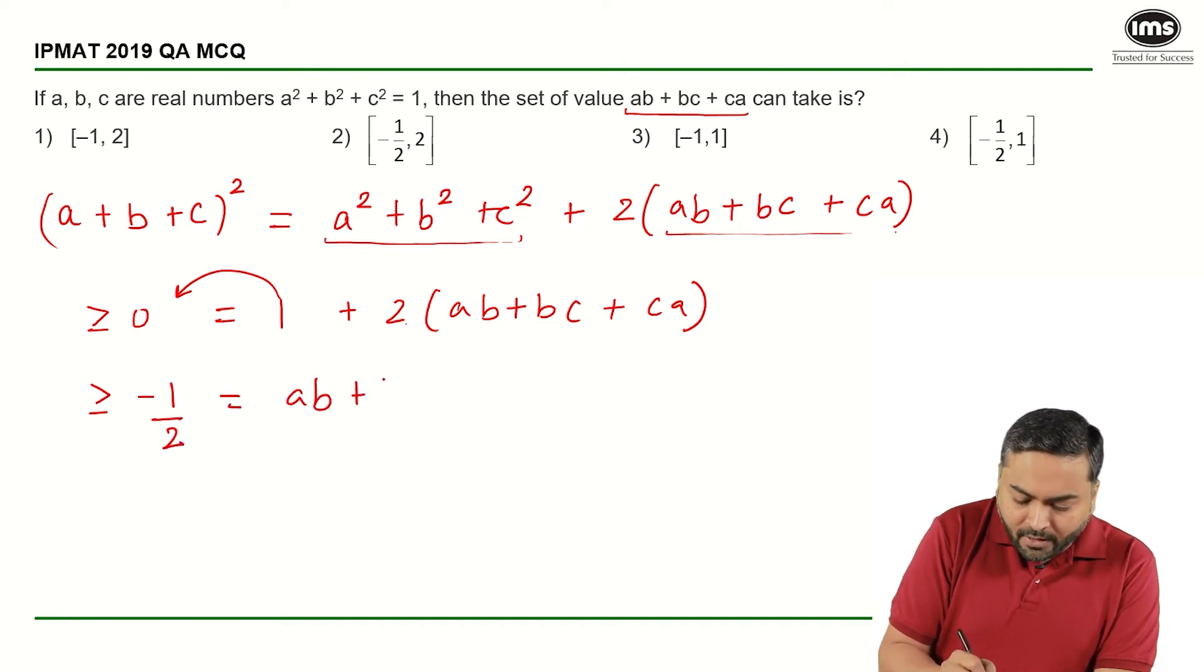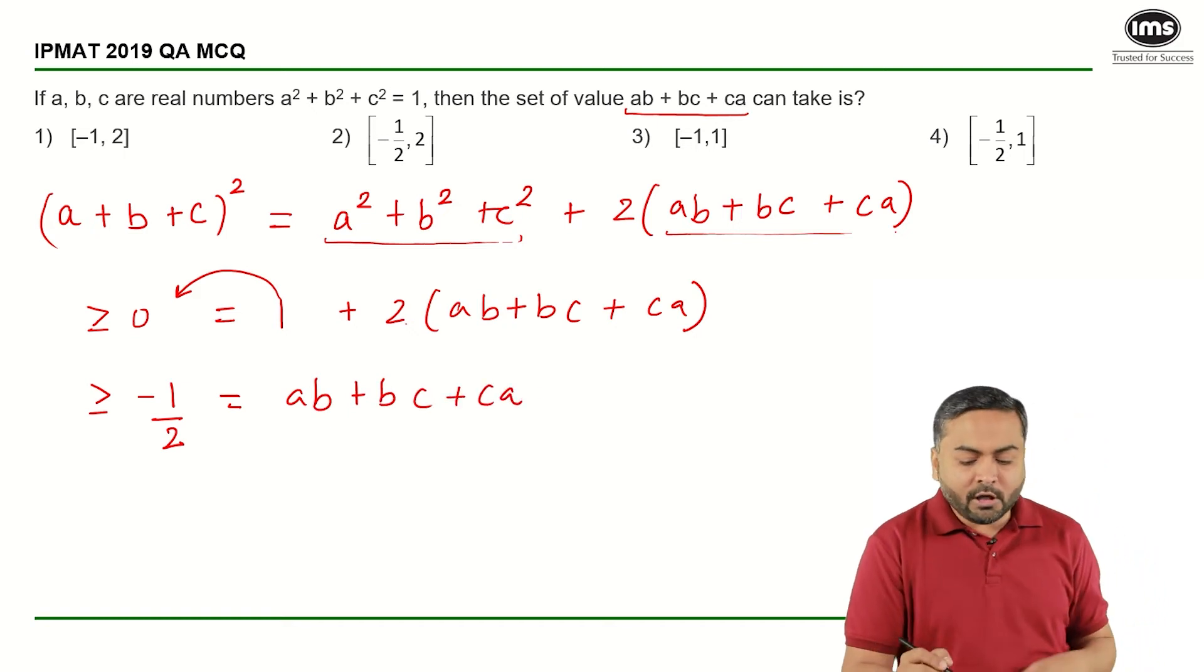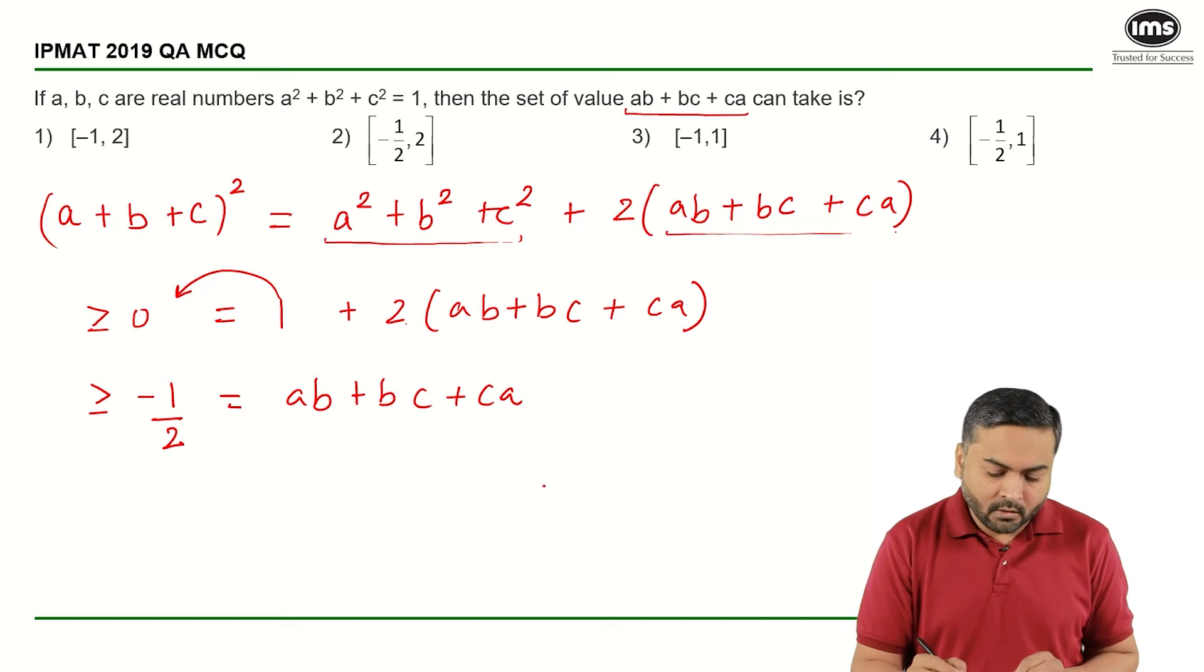So AB + BC + CA is greater than or equal to -½.